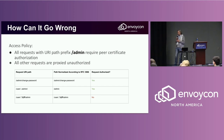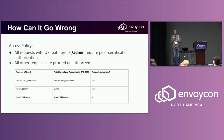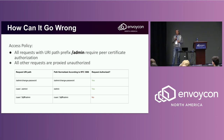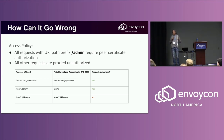A little more complicated: /user/../admin. In this case, standard-compliant normalization removes the dot-dot and the previous segment, producing the /admin path, which matches our prefix and triggers the authorization check.